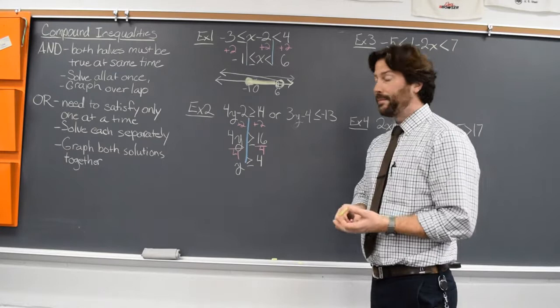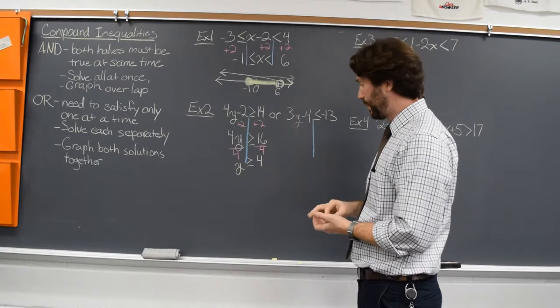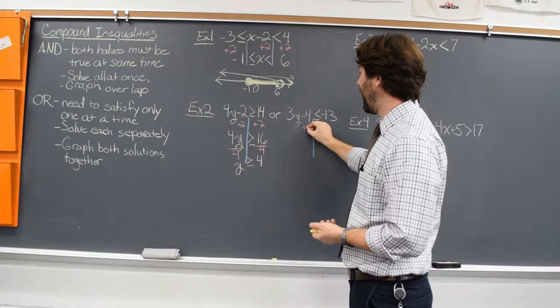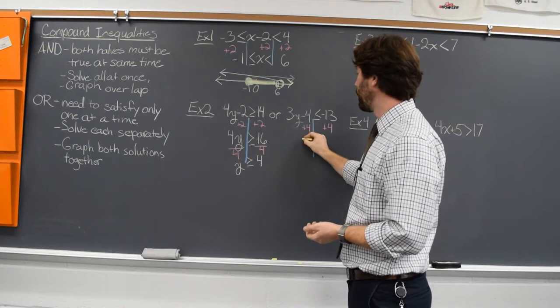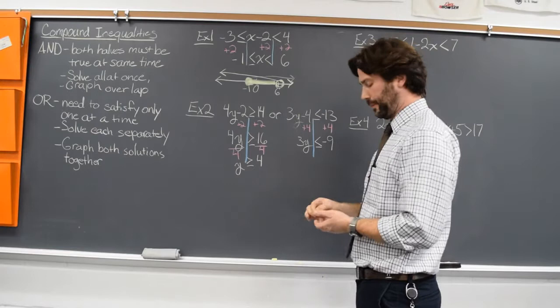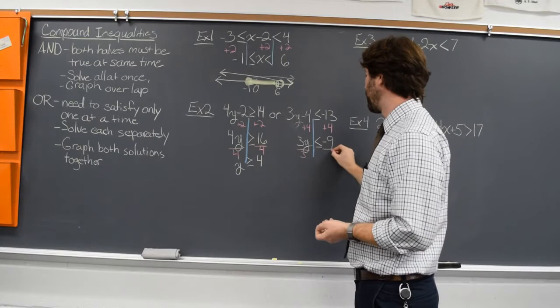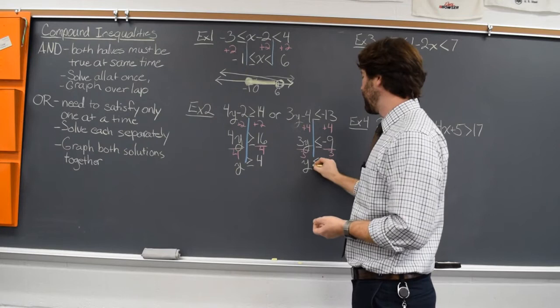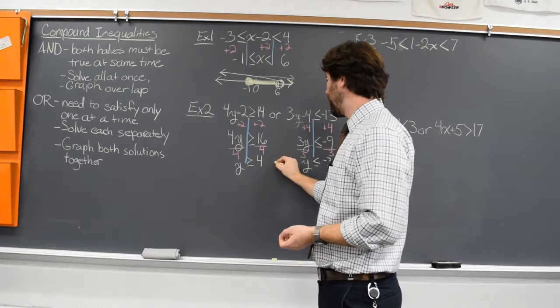Then over here on the right side, on the second inequality, same thing — vertical line. y is being multiplied by three and then subtracted by four, so we'll add four to both sides. Negative four plus four gives me zero, so I have three y is less than or equal to negative thirteen plus four, which is negative nine. Now I want y all the way by itself, so we'll divide both sides by three, and I'll have y is less than or equal to negative three. This is my solution right here.